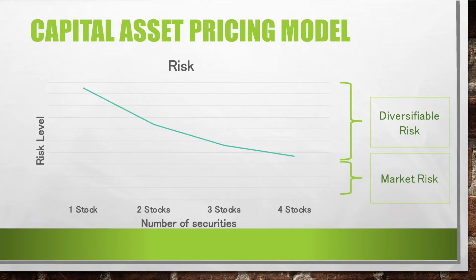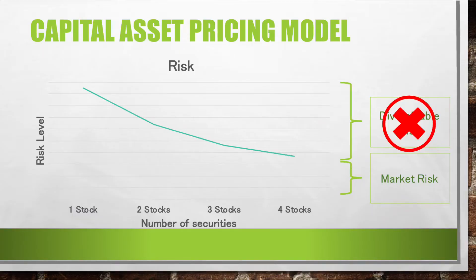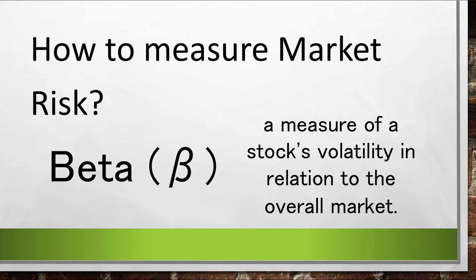The diversifiable risk is also known as the non-systematic risk — this is the risk that can be eliminated by diversification. Meanwhile, market risk, also known as systematic risk, is the risk that is inherent in the market; it cannot be eliminated by diversification. Going back to the assumption of the Capital Asset Pricing Model, the investors are presumed to be diversified — they hold a portfolio. So what matters now is only the market risk.